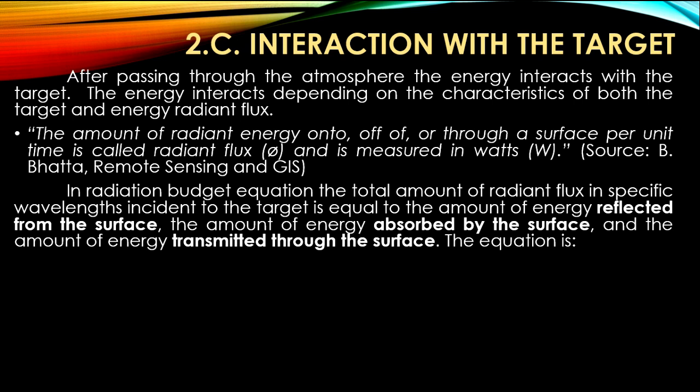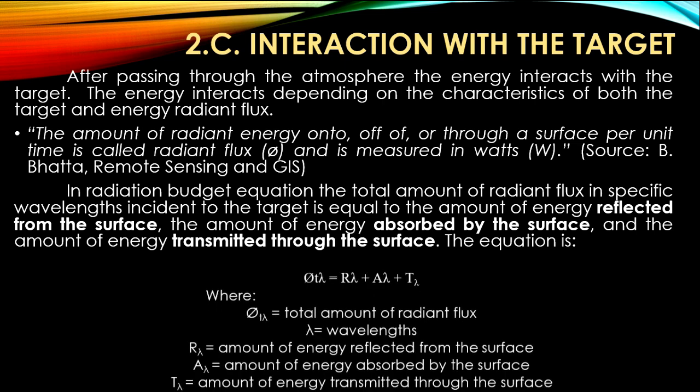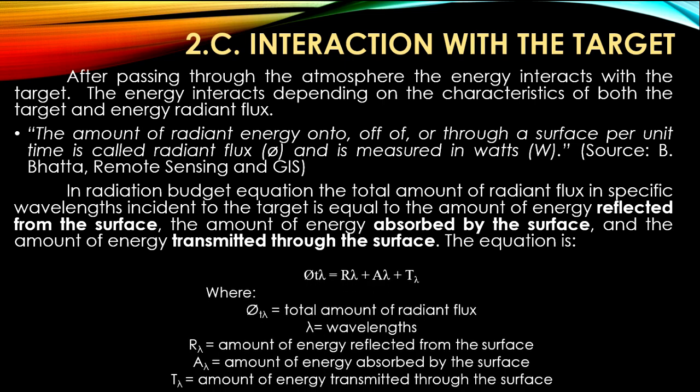to the amount of energy reflected from the surface, the amount of energy absorbed by the surface, and the amount of energy transmitted through the surface. The equation is: φ_tλ = R_λ + A_λ + T_λ, where φ_tλ equals total amount of radiant flux, and T_λ equals the amount of energy transmitted through the surface.